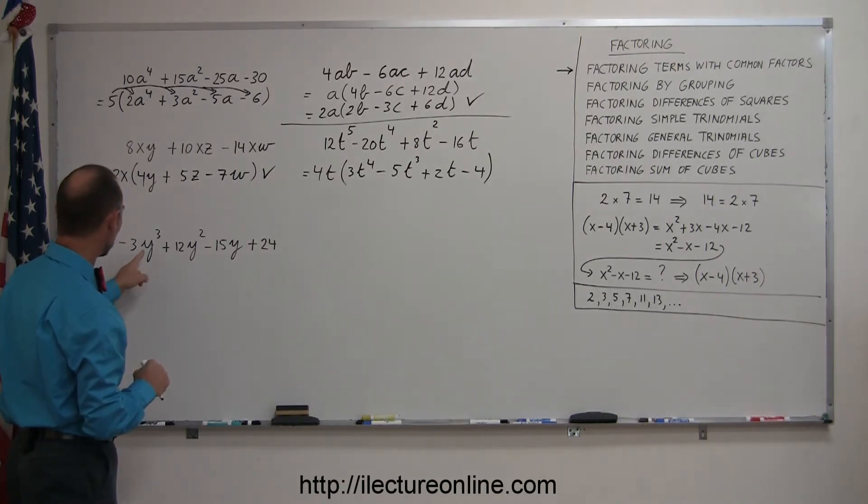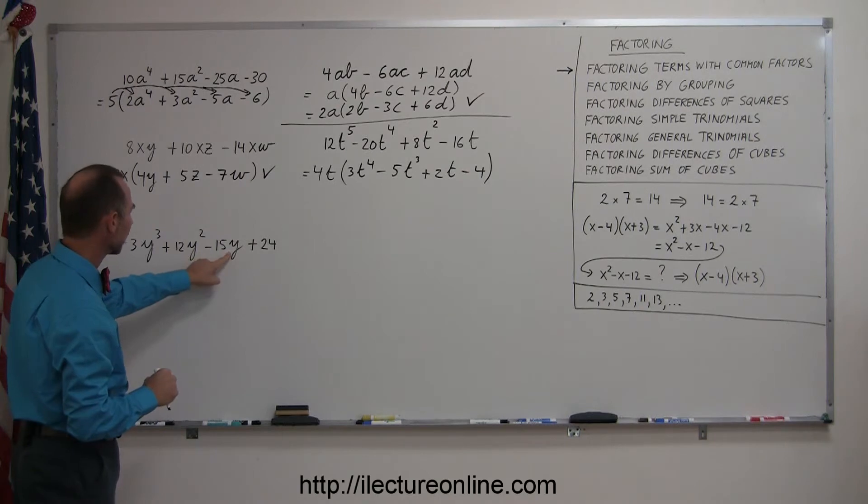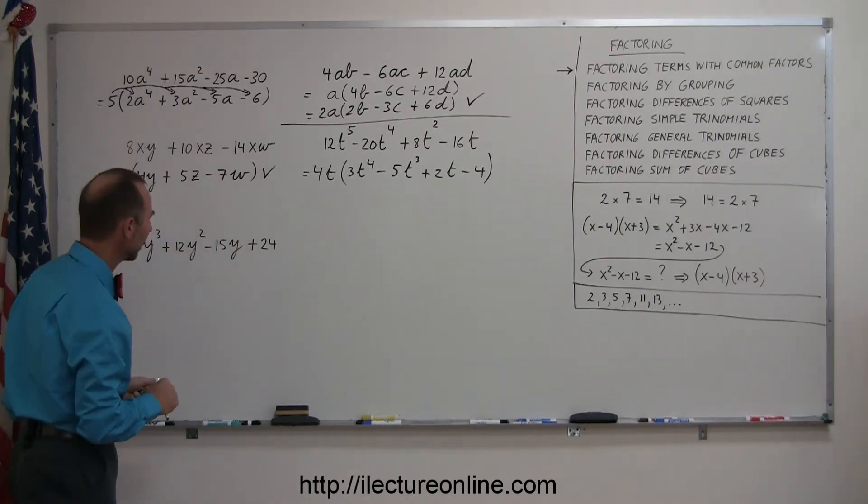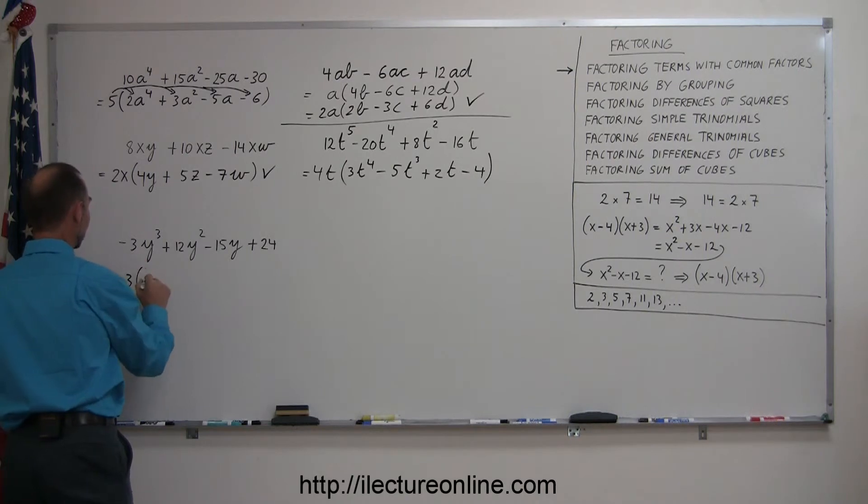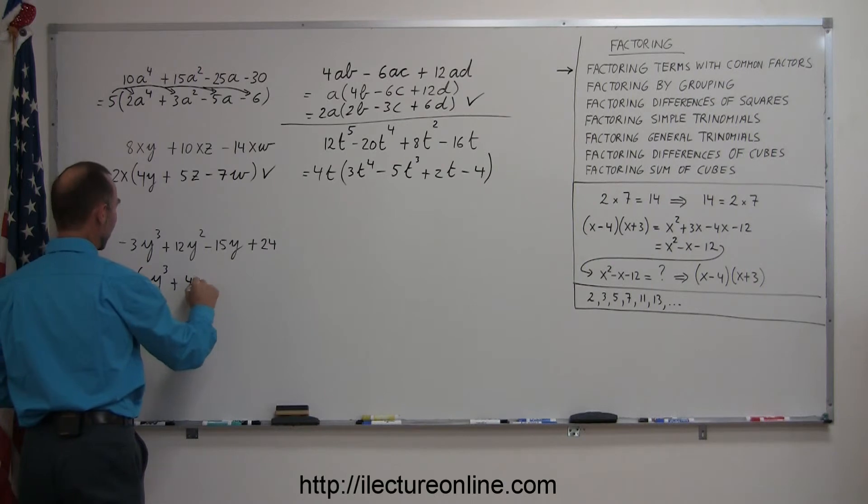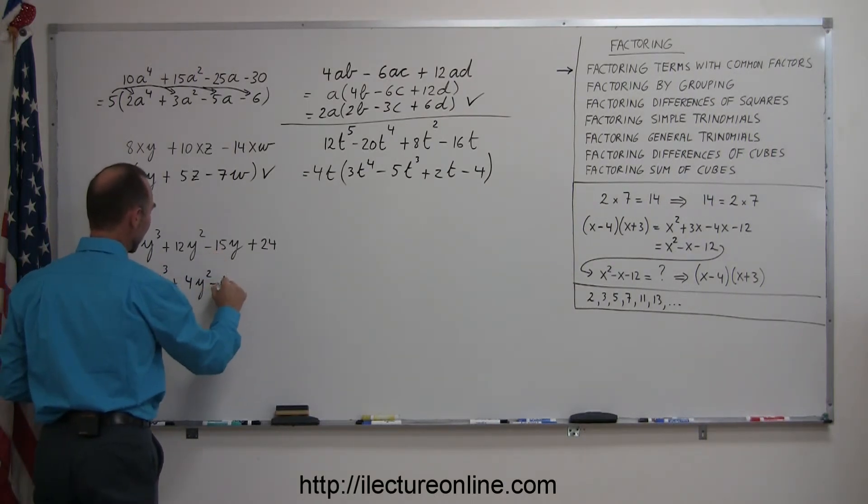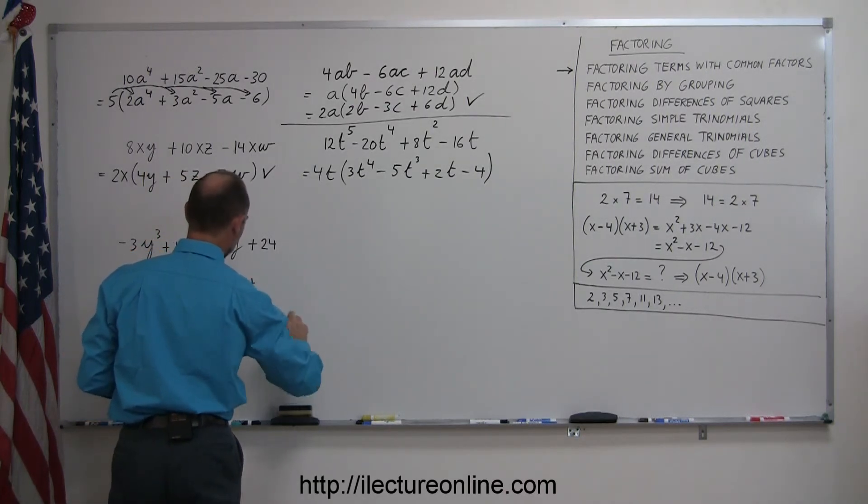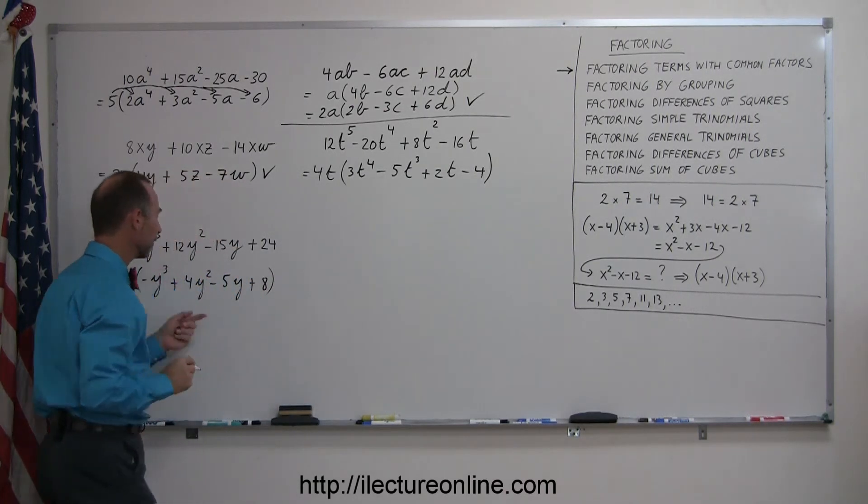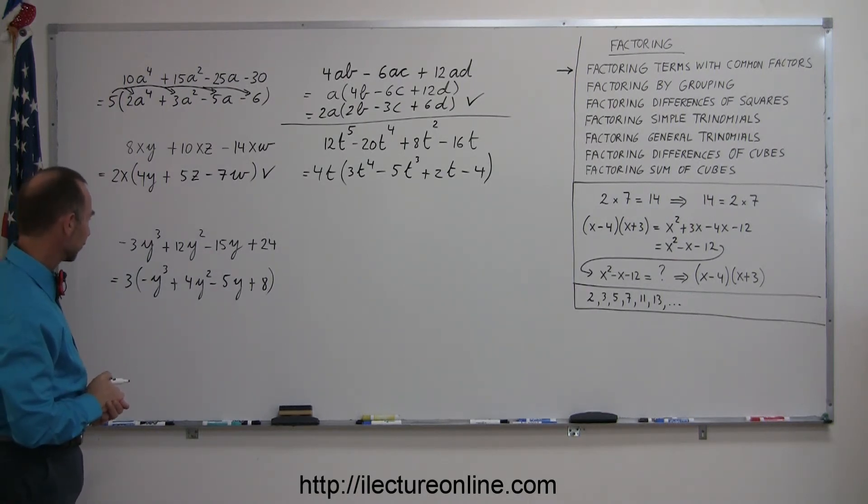Also looking at the letters here, the variable y, I have a y cubed, a y squared, y to the first power, but the last number here, the last term does not have a y in it, so I cannot factor out a y, so all I can factor out in this case is just a 3, so this is equal to 3 times, and what I have left is minus y cubed plus 12 divided by 3 gives me 4y squared, 15 divided by 3 gives me 5, but don't forget the minus, so it's minus 5y, and finally 24 divided by 3 is 8, and so there's my original problem in its factored form.